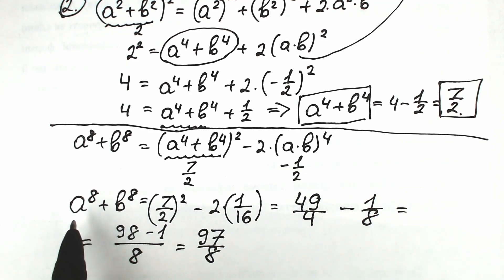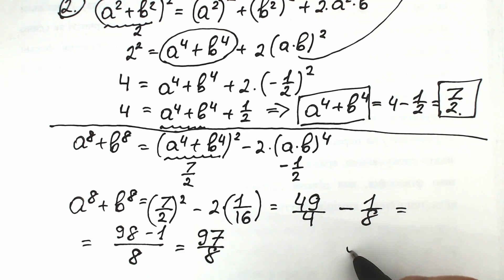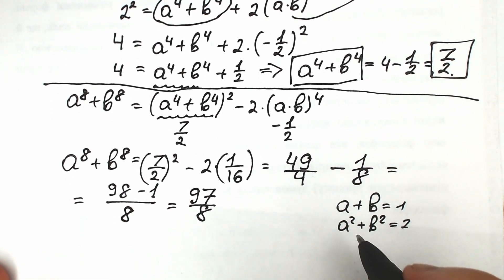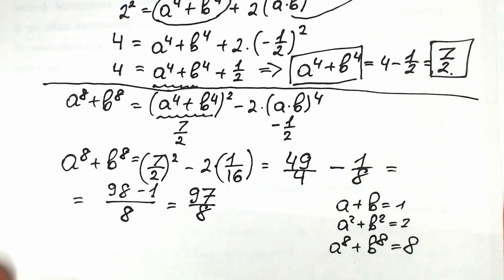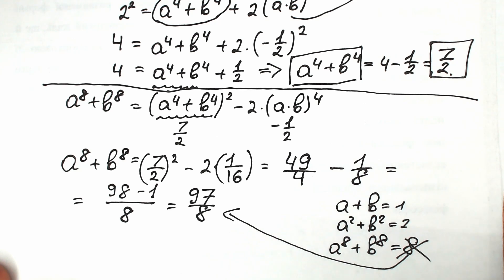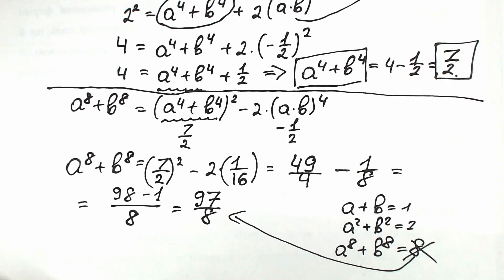So our answer is 97 over 8. A lot of students might say: if a plus b equals 1 and a squared plus b squared equals 2, then a to the 8th plus b to the 8th equals 8. But as you can see, this is a completely different answer. Forget that logic — it doesn't work like that. On your exam, you need to know the math rules and properties, and how to solve this correctly step by step.